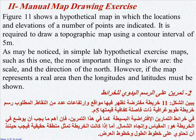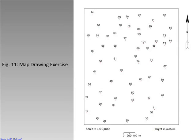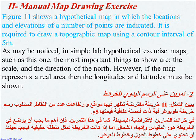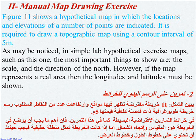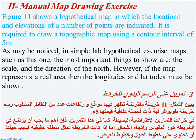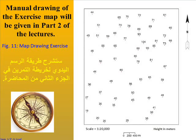Manual map drawing exercise: figure 11 shows a hypothetical map in which the locations and elevations of a number of points are indicated. It is required to draw a topographic map using a contour interval of 5 meters. As may be noticed, in simple laboratory hypothetical exercise maps such as this one, the most important things to show are the scale and the direction of the north. However, if the map represents a real area, then the longitudes and latitudes must be shown. Manual drawing of the exercise map will be given in Part 2 of the lecture.